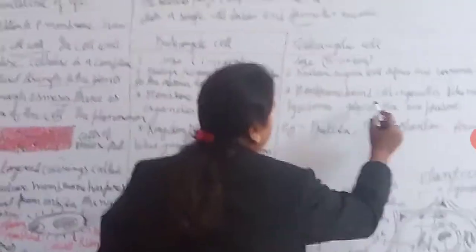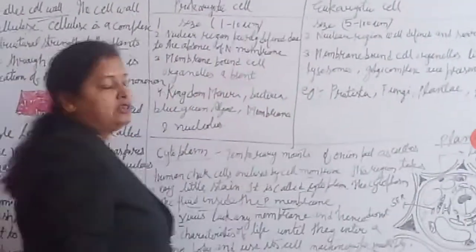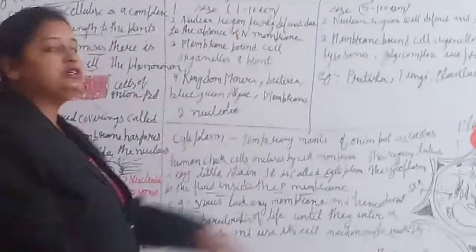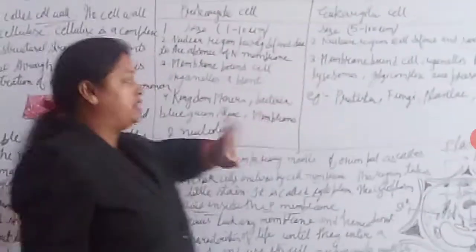Now, membrane-bound cell organelles such as mitochondria, lysosomes, and vacuoles are present in eukaryotic cells.